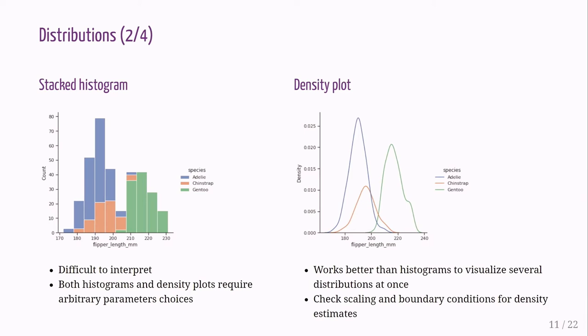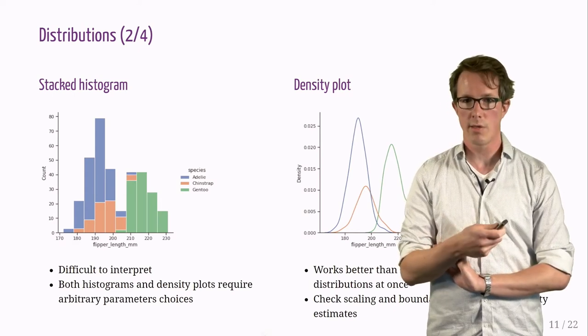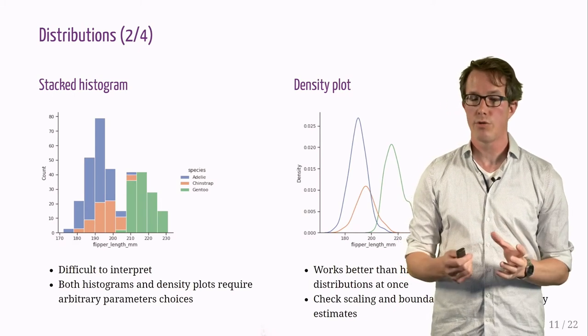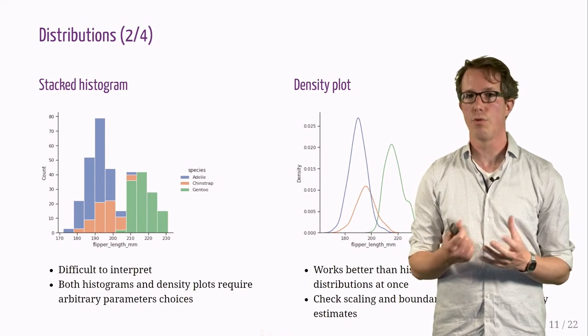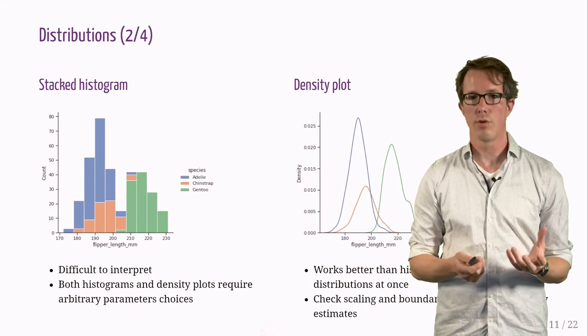For density plots, check the scaling and the boundary conditions. Also remember that both histograms and density plots often require arbitrary parameter choices for binning or convolution, and we should report these parameters together with our plots.